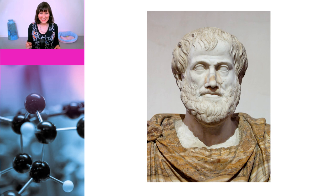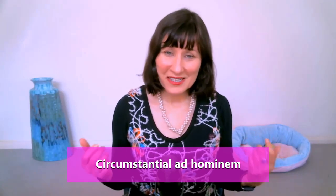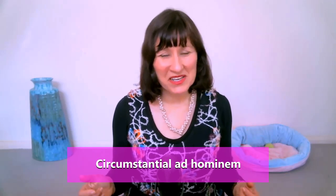Although I'm guessing he wouldn't have called it ad hominem, as he would have been speaking ancient Greek and not Latin. Now there are a few different types of ad hominem arguments and I'll just take you through a few of them. The first one is circumstantial ad hominem, or appeal to motive. This is an argument that dismisses a certain stance by questioning the motives of the person who supports it. Here are a few examples from the comment sections of my videos.